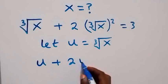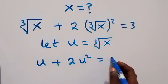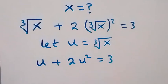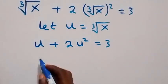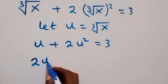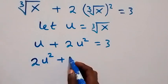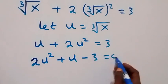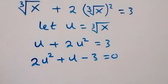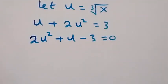We can now write this equation in terms of u, so this becomes u plus 2u squared equals 3. Let's rearrange — taking 3 to this side — so we have 2u squared plus u minus 3 equals 0.